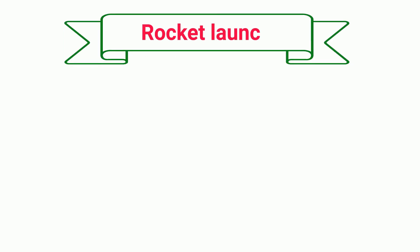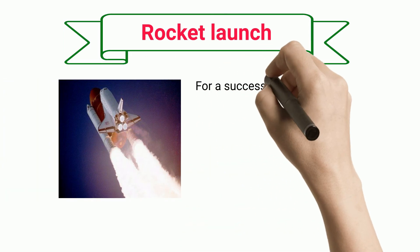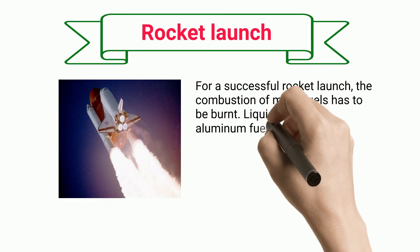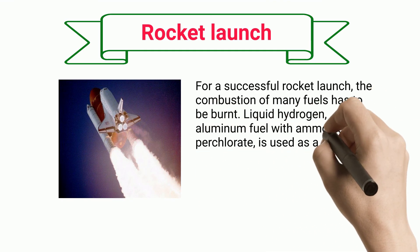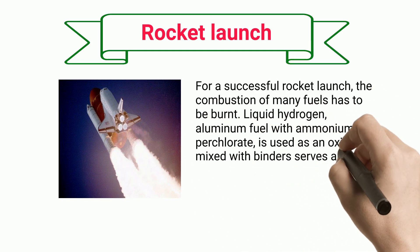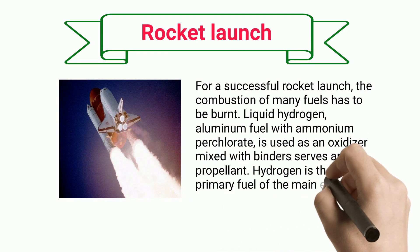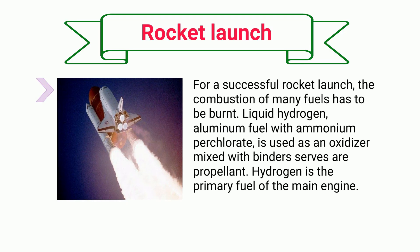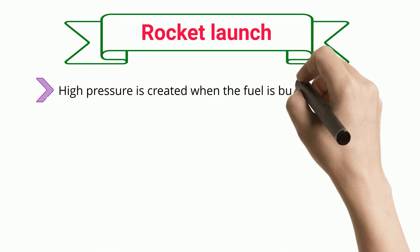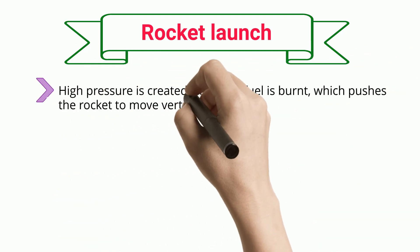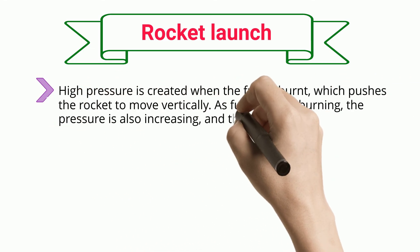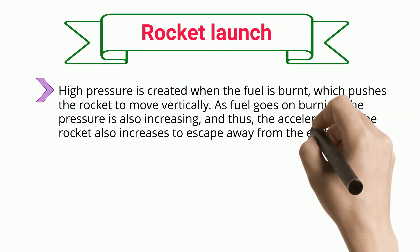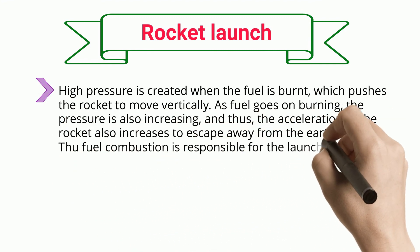Rocket Launch. For a successful rocket launch, the combustion of many fuels has to occur. Liquid hydrogen and aluminum fuel with ammonium perchlorate is used as an oxidizer mixed with a binder that serves as a propellant. Hydrogen is the primary fuel of the main engine. High pressure is created when the fuel is burnt, which pushes the rocket to move vertically. As fuel keeps burning, the pressure increases and thus the acceleration of the rocket also increases to escape Earth's gravity.